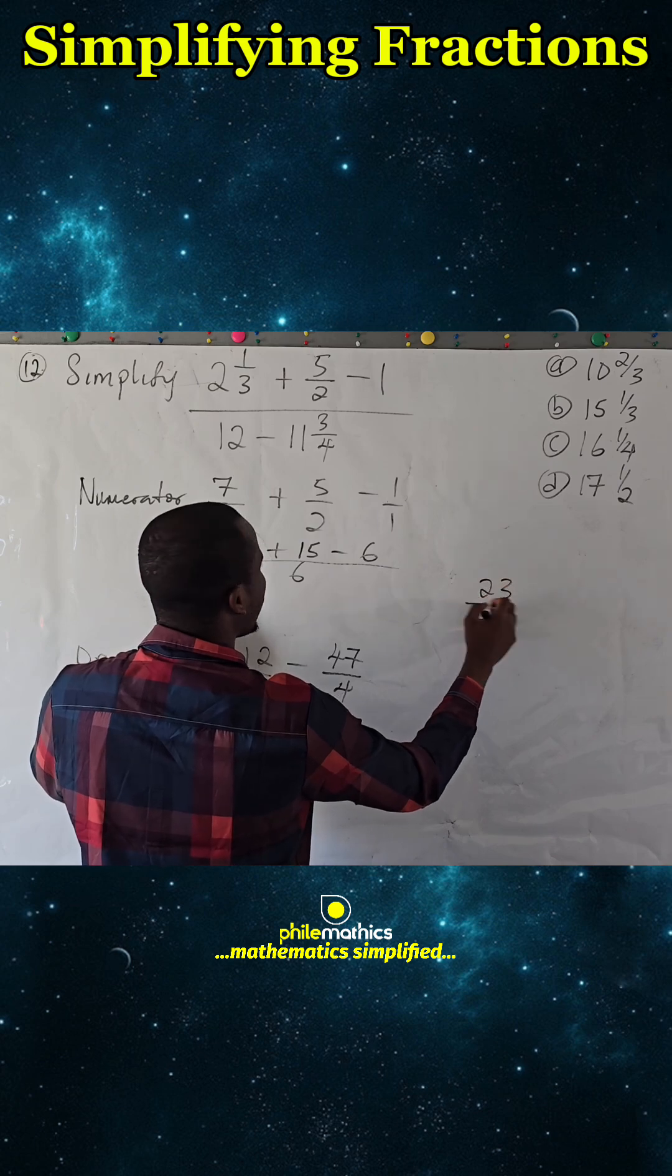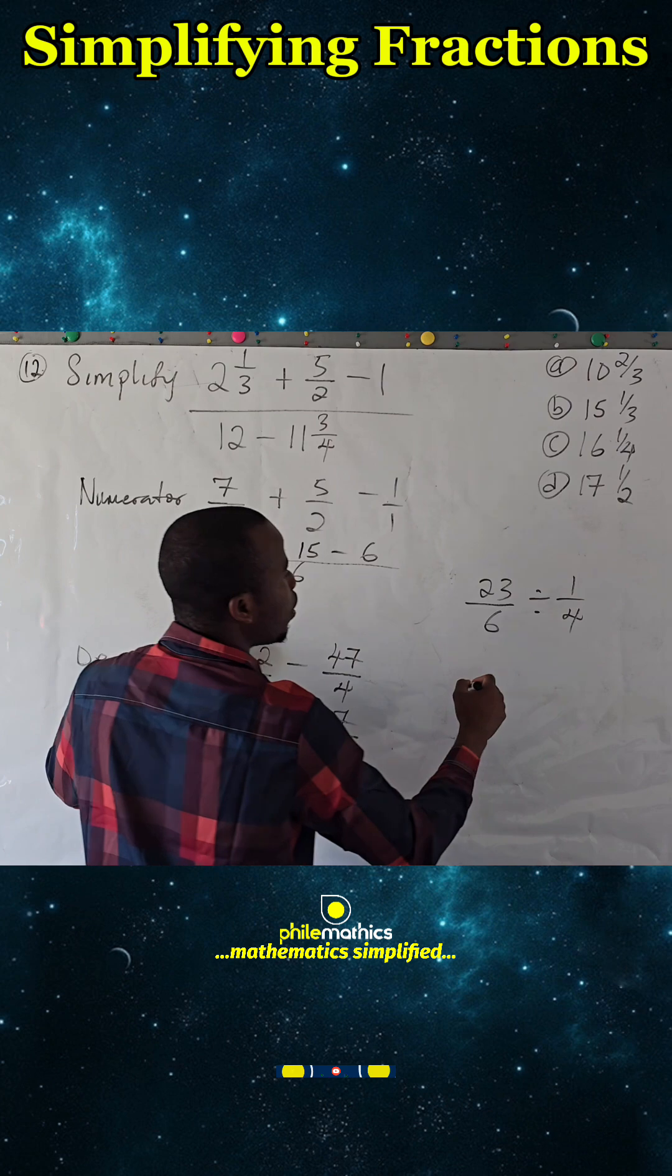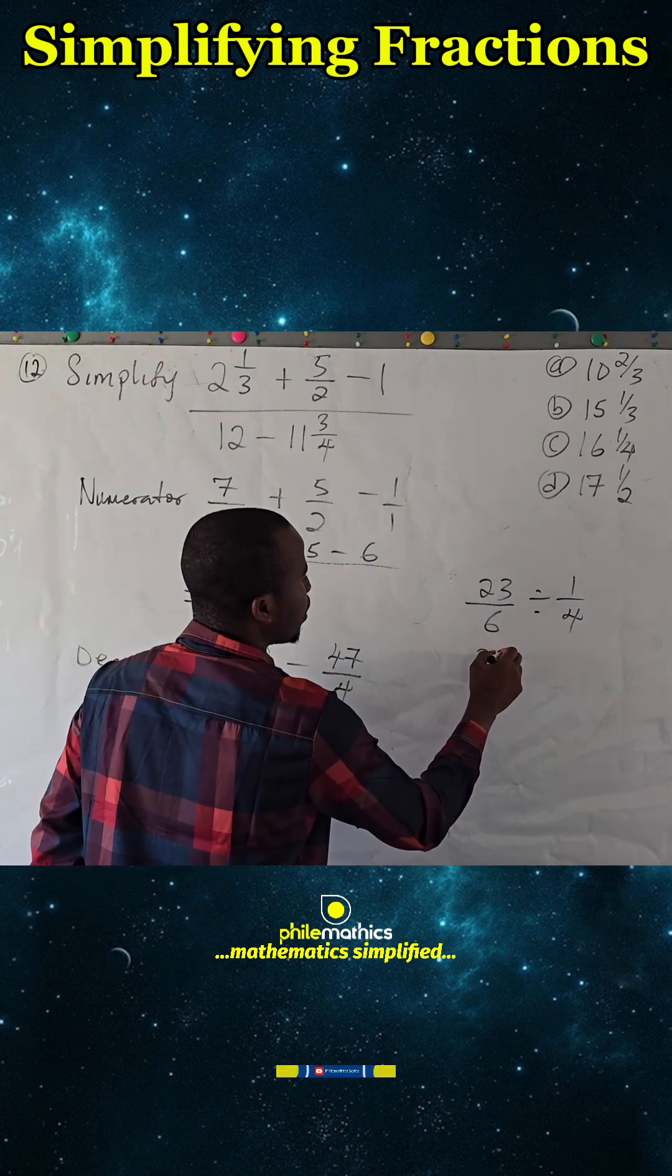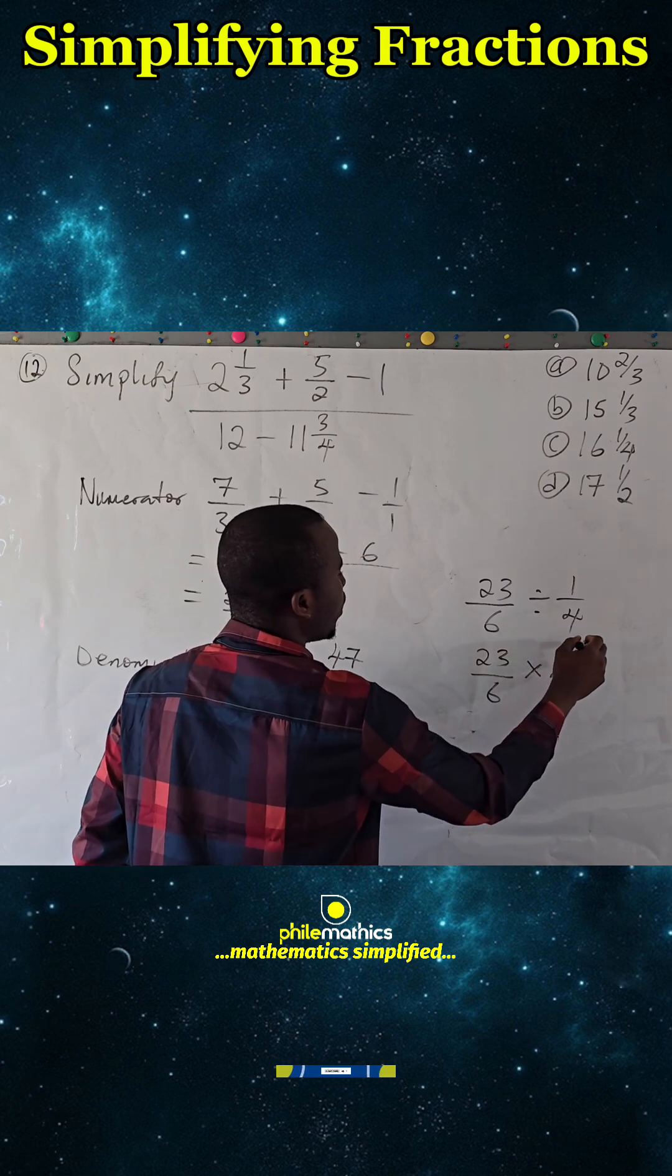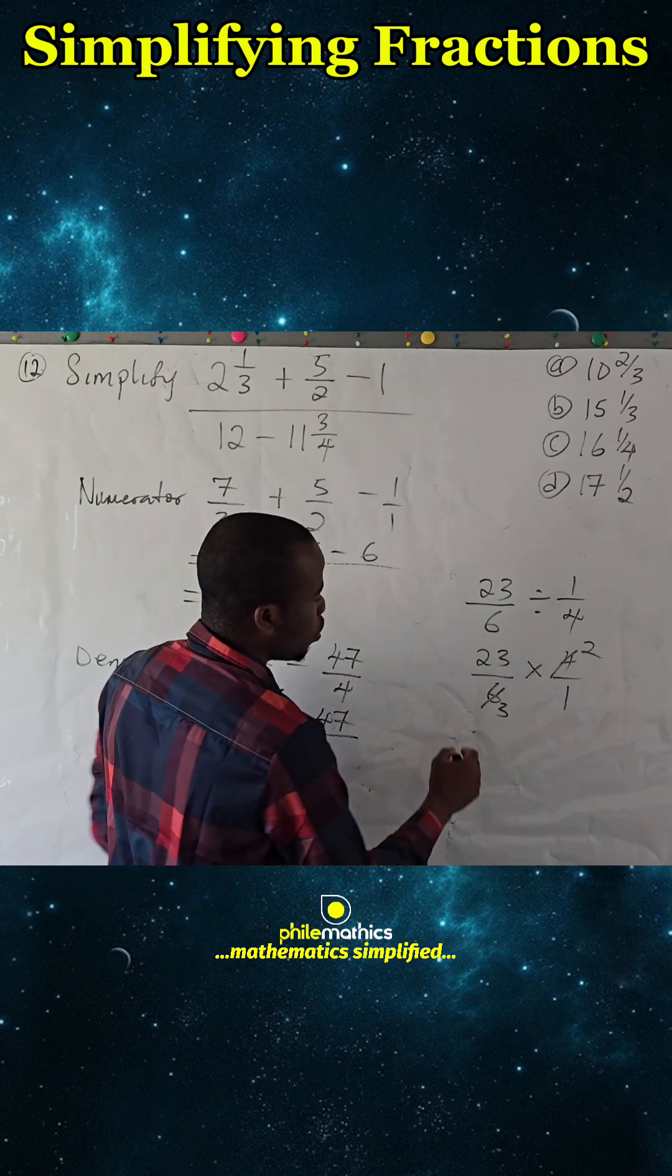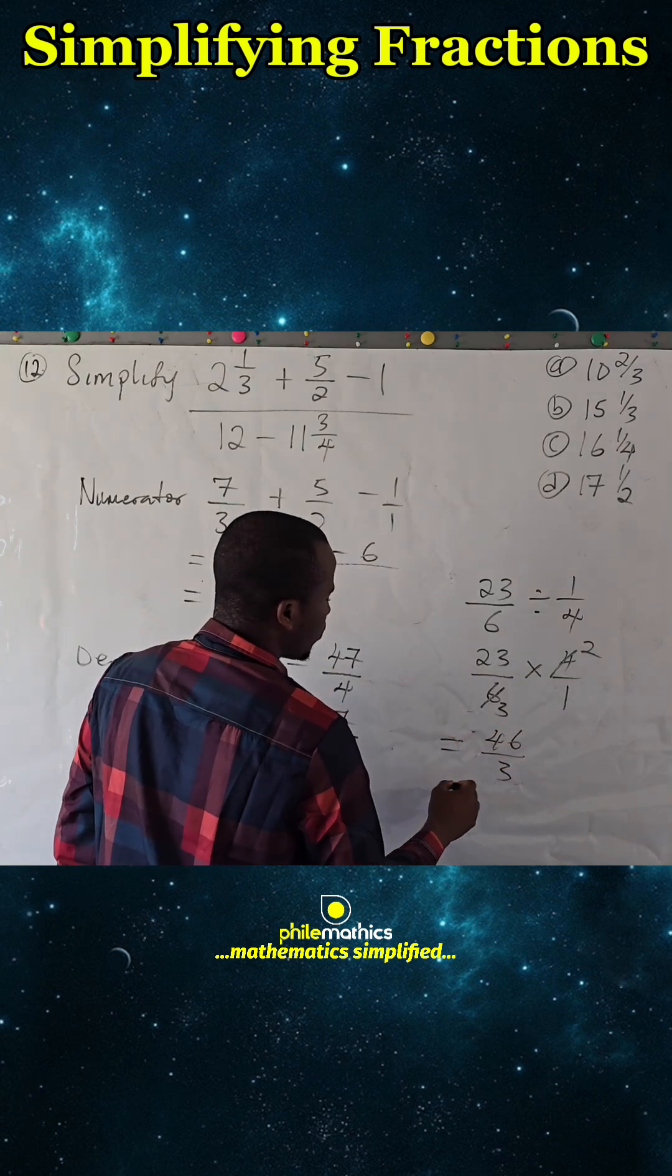So if we take division to multiplication, we'll have 23 over 6 times 4 over 1. 2 here is 2, 2 here is 3. 23 times 2 is 46 over 3.